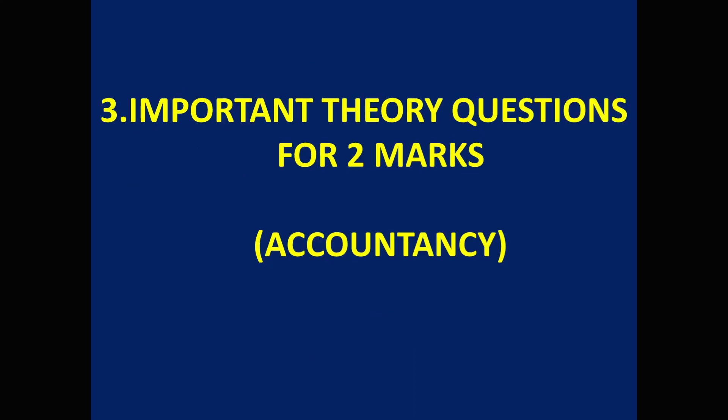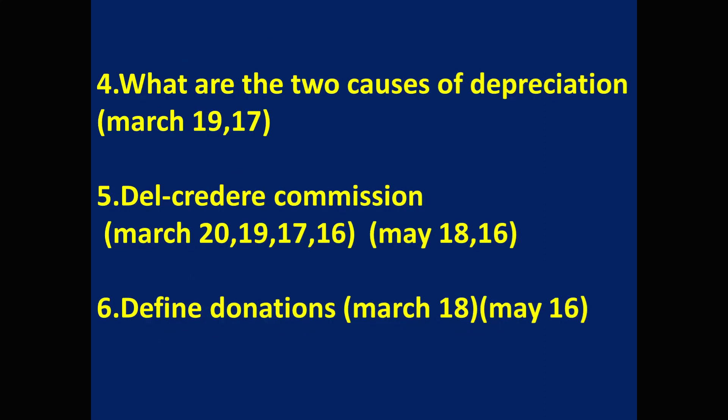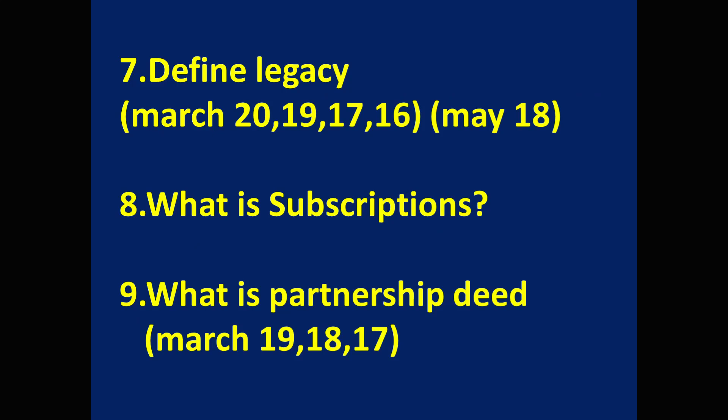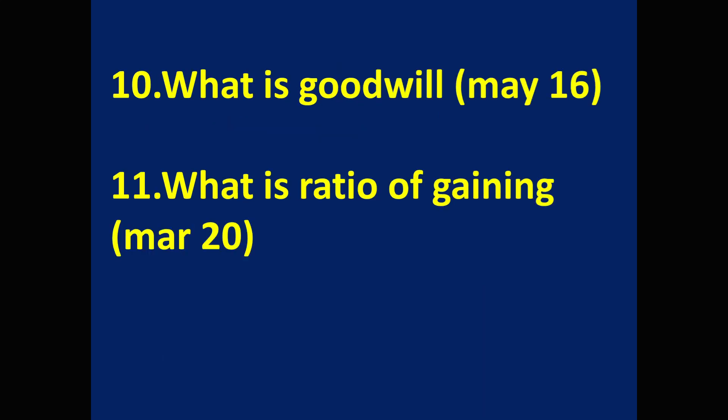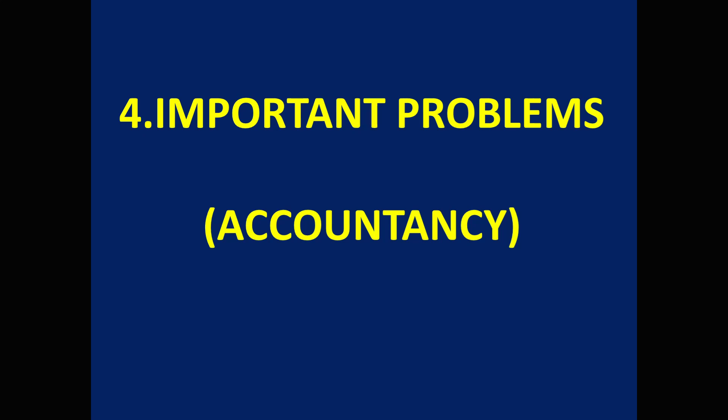Important two-marks theory questions from accountancy part: first — define the term depreciation; second — what is depletion; third — what is obsolescence; fourth — what are the two causes of depreciation; fifth — del credere commission; sixth — define donations; seventh — define legacy; eighth — what is subscriptions; ninth — what is partnership deed; tenth — what is goodwill; eleventh — what is ratio of gaining; twelfth — what is computerized accounting; thirteenth — scalability; fourteenth — supremacy. With this, important theory questions from accountancy part are completed.